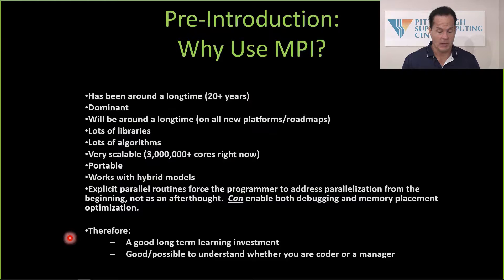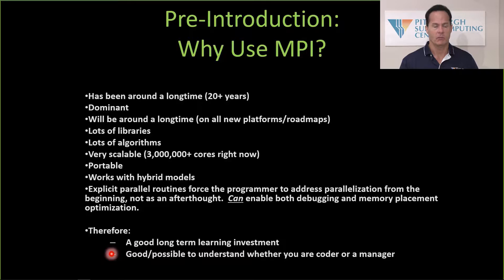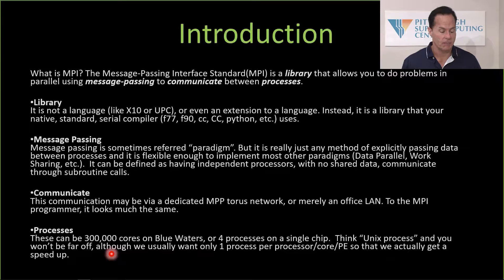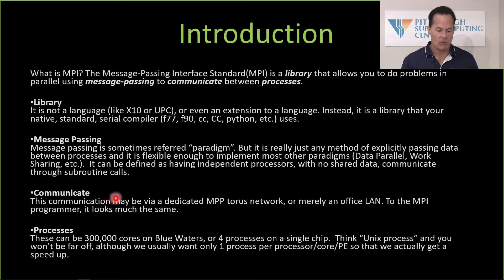Even if you don't end up using MPI explicitly for coding, in a couple of days you'll have a good solid understanding of it. You can appreciate when somebody says we want to use this software framework or target this hardware — you'll have an idea of how realistic that is or how painful it would be to port something. So let's look at what MPI is. In one sentence: the Message Passing Interface standard is a library that allows you to do problems in parallel using message passing to communicate between processes.